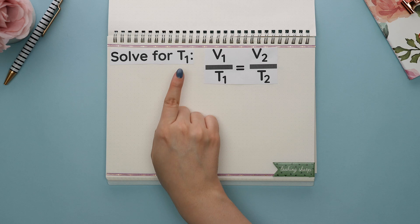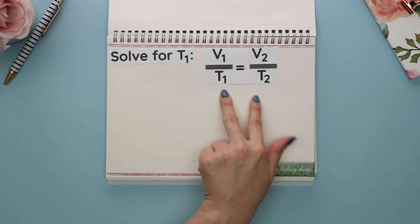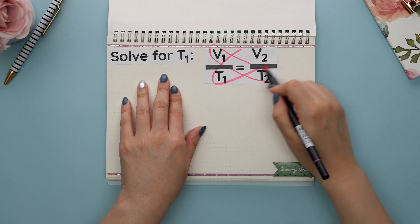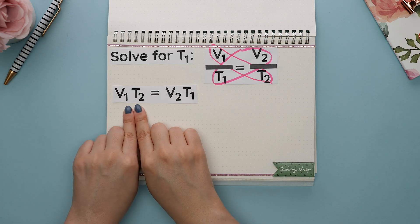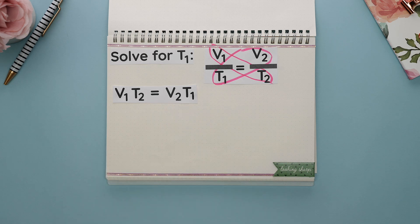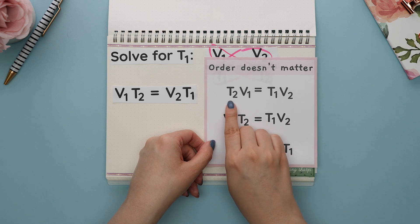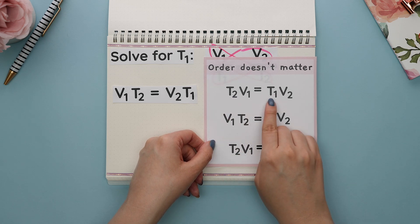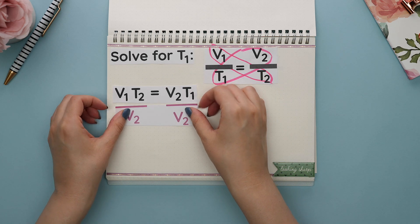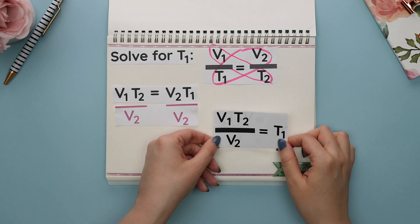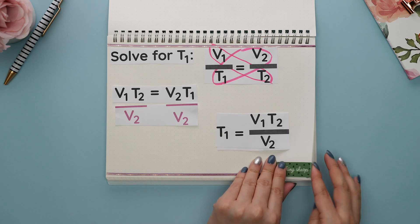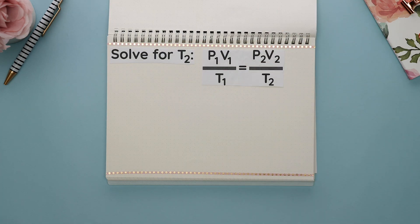Using the same gas law, let's now solve for T1. Since these are two fractions set equal to each other, we can use our trick and multiply diagonally to get rid of the fractions. We get V1 times T2 and V2 times T1. Order doesn't matter — we could say T2·V1 and T1·V2. Next, divide both sides by V2 to get T1 by itself, then flip this around to get our answer.